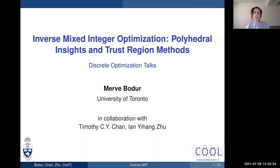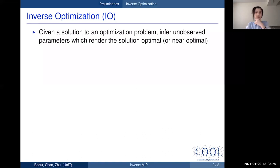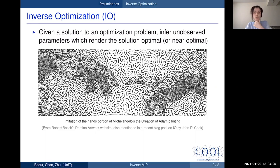So what is inverse optimization — I'll call it IO for short. In IO we flip our traditional optimization setup: the solution to the problem is known, for instance an observed decision from the past, and what is unknown is some problem parameters. The goal in inverse optimization is to infer those parameters which render the given solution optimal, or near-optimal.